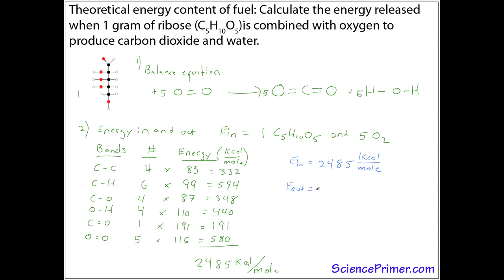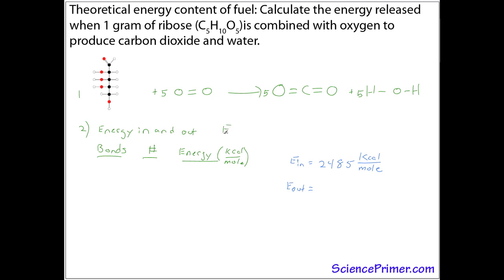Next step is to calculate energy out. So we'll go through the same process, but this time we'll be looking at the bonds in the products. And the products in this reaction are five moles of carbon dioxide and five moles of water. Take the bond inventory. There are carbon-oxygen double bonds and hydrogen-oxygen single bonds. There's two bonds in each of these molecules. So there's a total of ten of each of these.